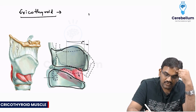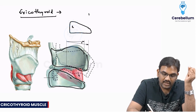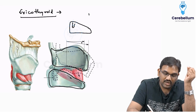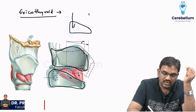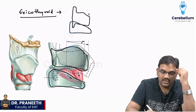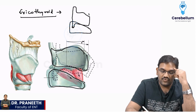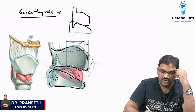If you take the lateral view, this is your cricoid lying like this, and from here your inferior cornu will be attached, and your superior cornu as well as your thyroid will be lying like this. This is your cricothyroid joint.